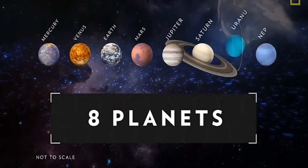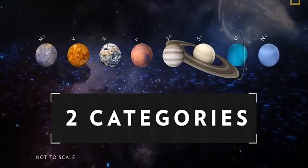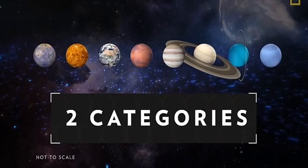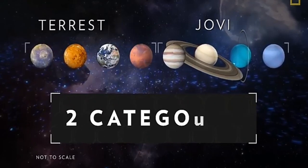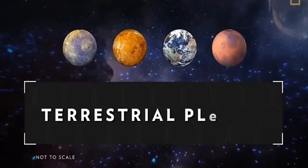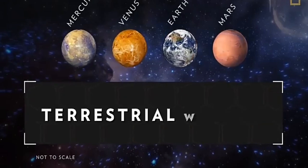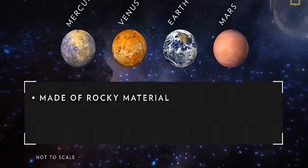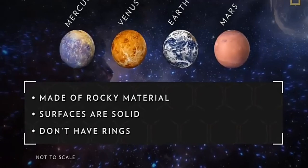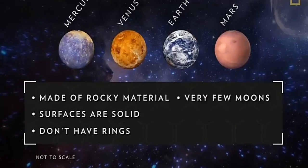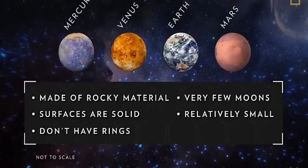Revolving around the Sun are eight planets, divided into two categories based on their composition: terrestrial and Jovian. Terrestrial planets — including Mercury, Venus, Earth, and Mars — are primarily made of rocky material. Their surfaces are solid, they don't have ring systems, they have very few or no moons, and they are relatively small.